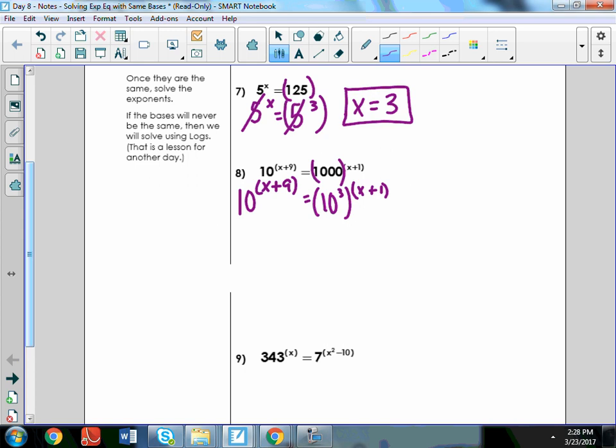Okay, so what do I do next now that I have matching bases? I get to cancel or cross off those base 10s, and I'm left with x plus 9 equals, when I have this power of 3 raised to another power, we're going to distribute, we're going to multiply. So, a power raised to a power, you multiply, so this will become 3 times x and 3 times 1. Make sure you distribute through that second number. The errors when I was walking around, I caught people, I was like, oh, you're off because you didn't distribute through the whole expression. So, make sure you take that, when you distribute that number, you distribute it through both terms, x and 1.